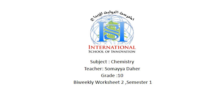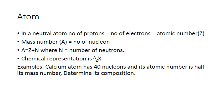Hello everybody. I will make a summary about the main topics in chapter 1 which is about the atom, before the exam. In a neutral atom, the number of protons equals the number of electrons, which equals the atomic number. The mass number equals the nucleon number — the number of particles inside the nucleus — which are protons and neutrons. So A equals Z plus N, and neutrons N equals A minus Z.